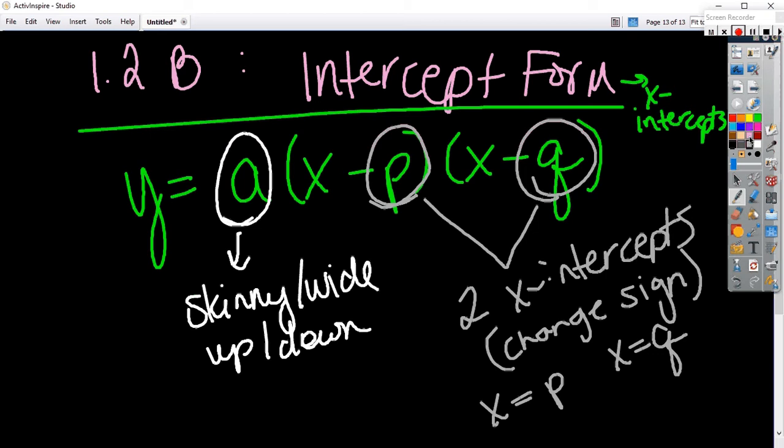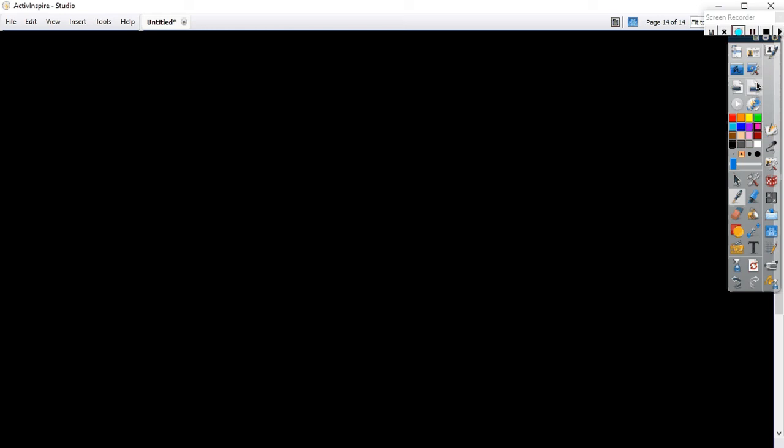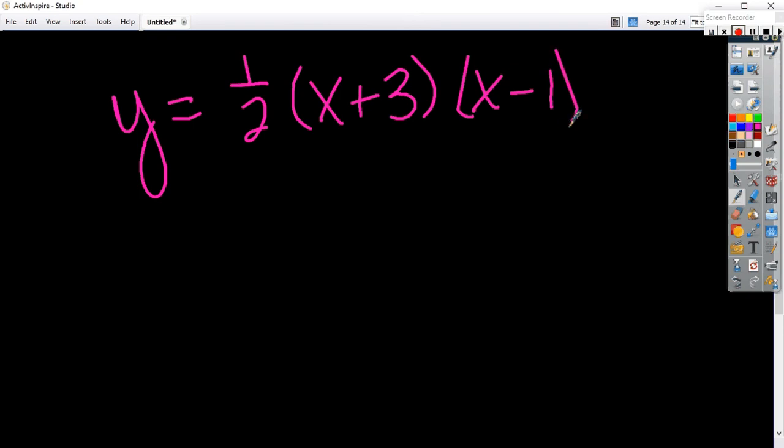Okay, let's say I give you this formula. Where does that quadratic cross the x-axis? What are the x-intercepts? Negative three. Positive one. I don't know what else is going on. Negative three and positive one. Yeah.